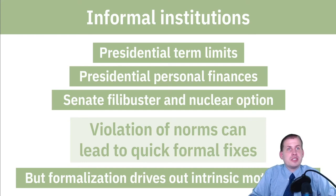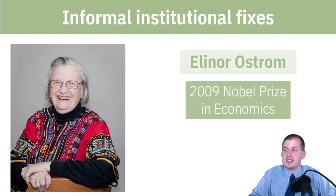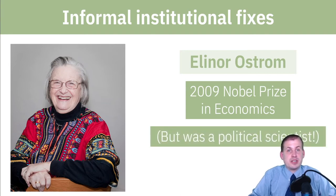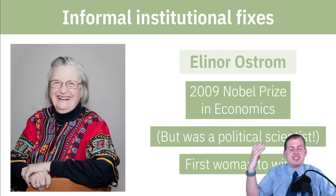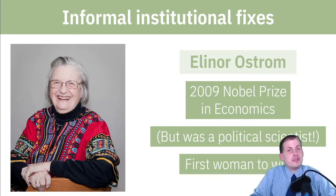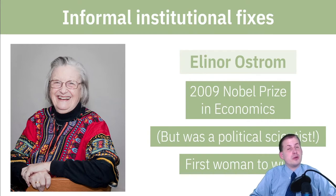One of the main researchers in using informal institutions to fix public goods issues is Elinor Ostrom, a political scientist at Indiana University until her death in 2012. In 2009 she was awarded the Nobel Prize in Economics even though she was not an economist — and she was also the first woman to win the Nobel Prize in Economics. Since then, only one other woman has won it: Esther Duflo in 2019, whose work you'll read about in the last session.